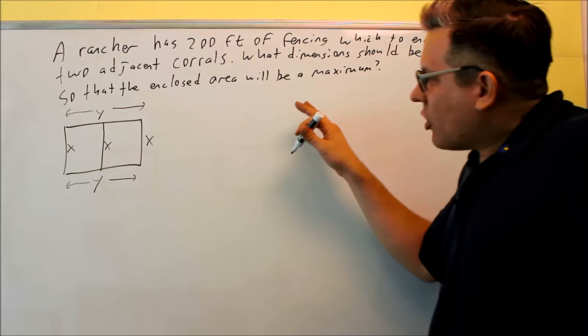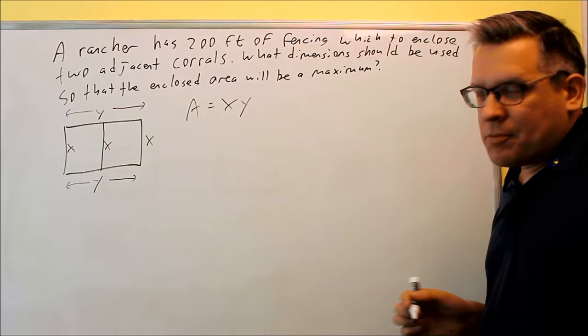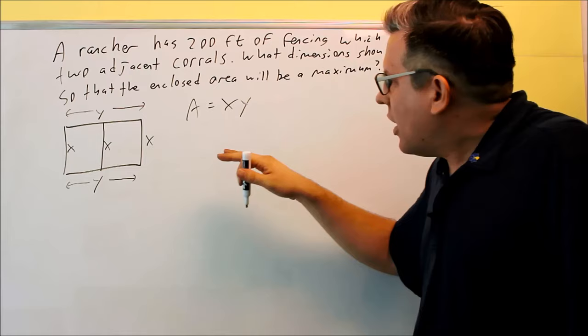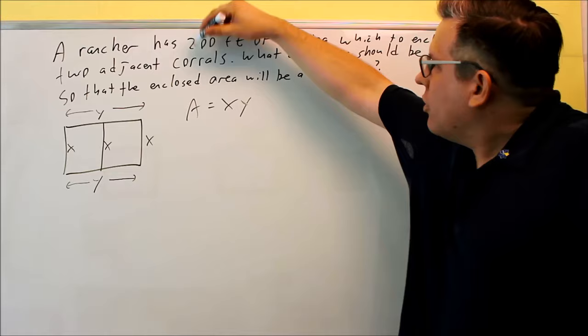First of all, we know that area is equal to x times y. Now, I don't want to take the derivative with this because it's too many variables. I want to first find another equation that I can use to substitute back in.